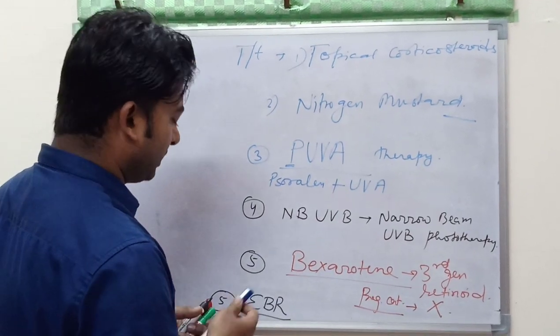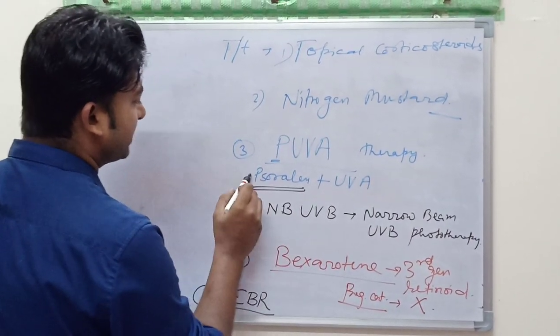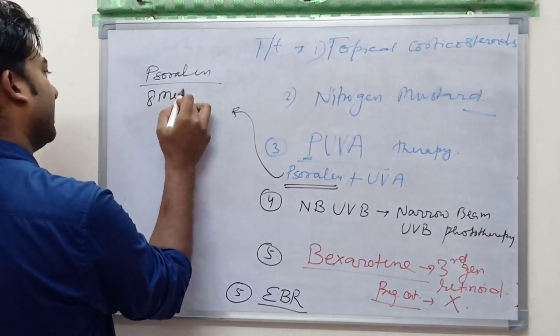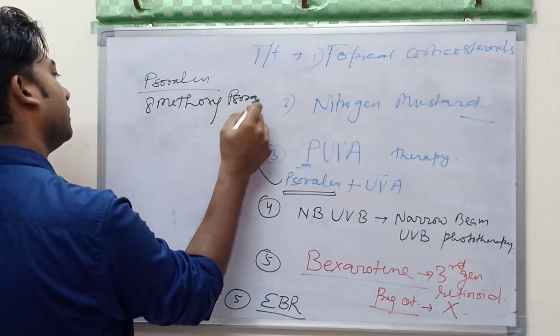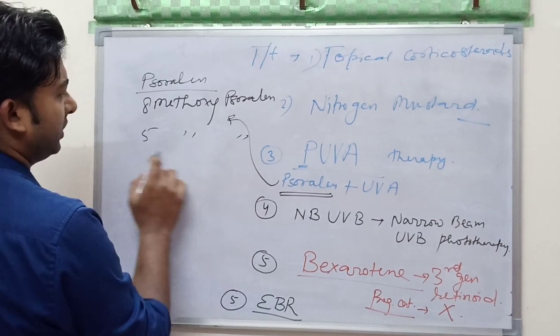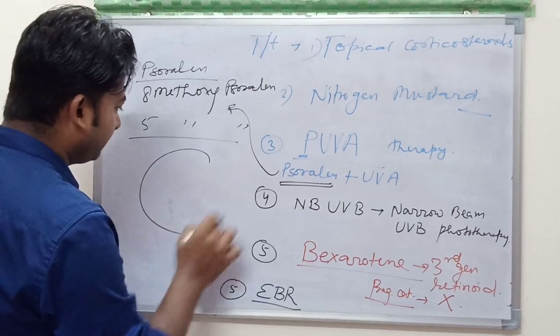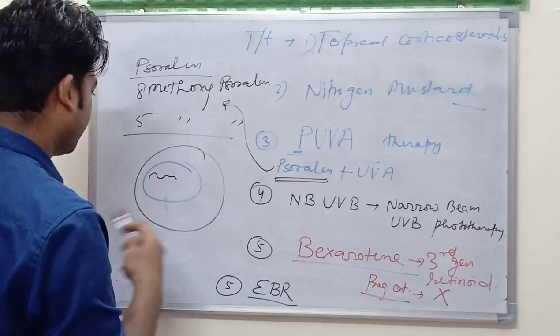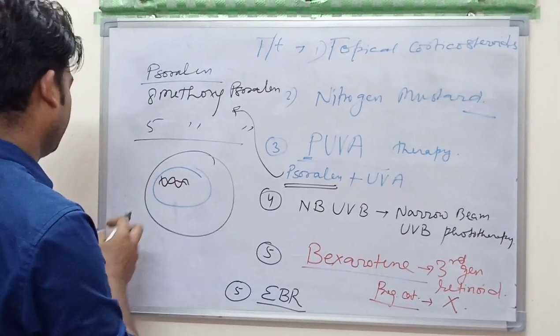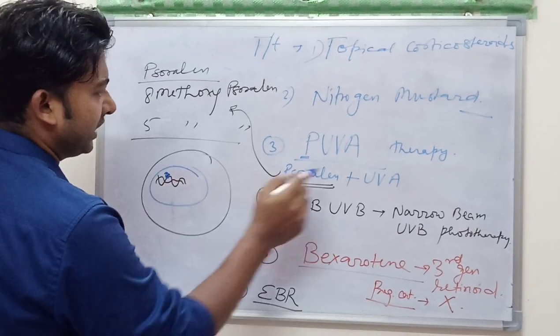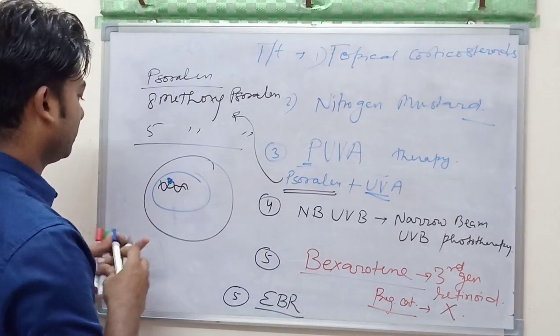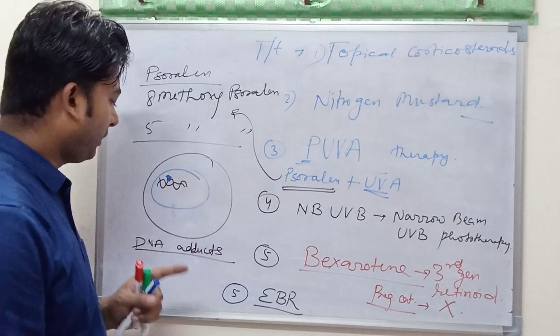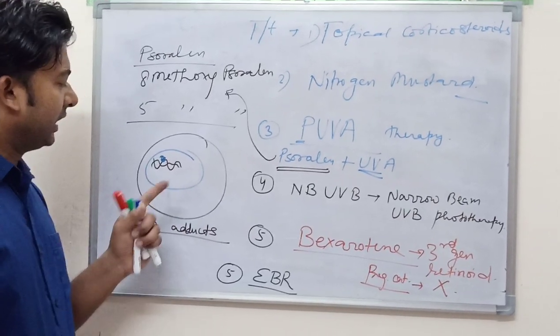This psoralen is photosensitive molecule, basically 8-methoxypsoralen or nowadays 5-methoxypsoralen. This is used, given to the patient. Patient ingests this and this binds to the DNA. Suppose this is the nucleus and this is the DNA. So psoralen binds to the DNA, and when we give UVA radiation it destroys this. In this way DNA gets destroyed. There is formation of DNA adducts. Mono or bi-DNA adducts of pyrimidine bases occur.